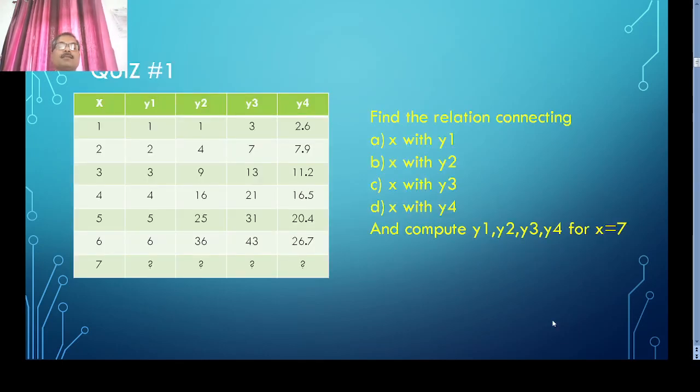Why? Because our human brains have limited capability. We need the support of a computing machine to find the relation. To solve these types of complex problems, we use machine learning.